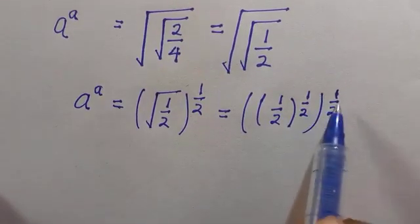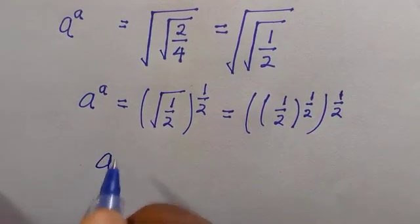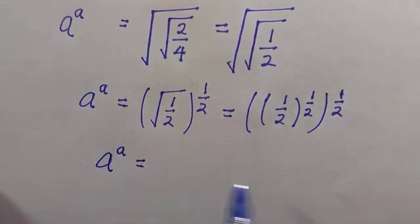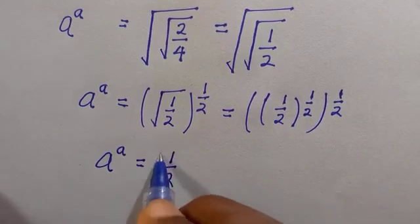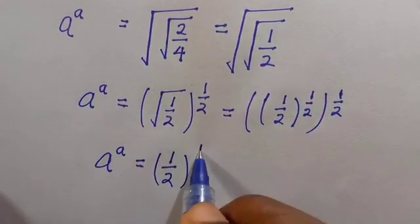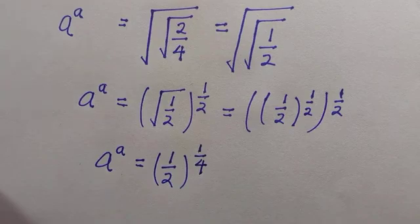Let's multiply the powers together. Then we have a to the power of a equals, base is 1 over 2, raised to power of 1 multiplied by 1 which is 1 divided by 4.